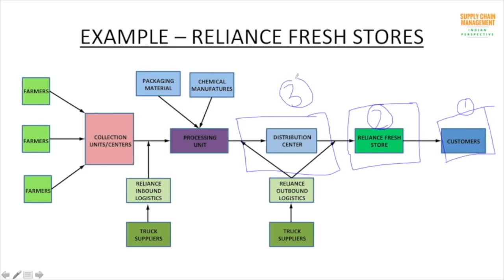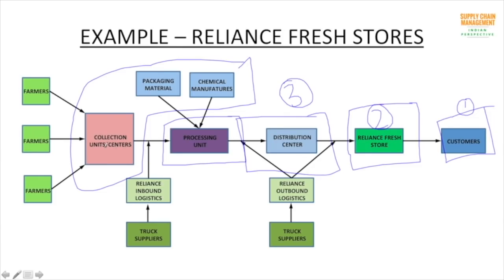The third stage is the warehouse or distribution stage. These distribution centers get products from the processing unit, which is our fourth stage — the manufacturing stage. This processing unit gets supplies from suppliers: first, raw materials or raw produce from different farmers; second, packaging material used to packet all products in standard quantities; and third, chemical manufacturers. This is our fourth stage, and all the suppliers combined form our fifth stage.